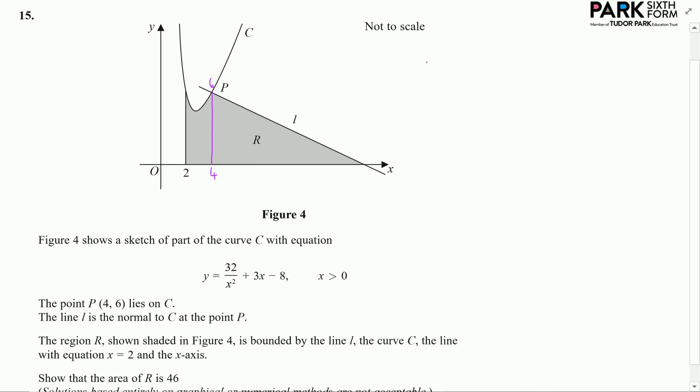So to write this down, first we want to integrate between 2 and 4 the function, so 32x to the minus 2 plus 3x minus 8 with respect to x. That's going to give me the area. We'll call this R1, and the triangle we'll refer to as R2. The total area R is going to be R1 plus R2. We'll make clear to our examiner what we're doing.